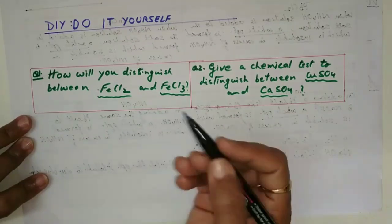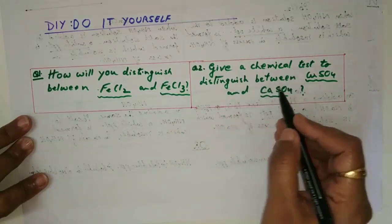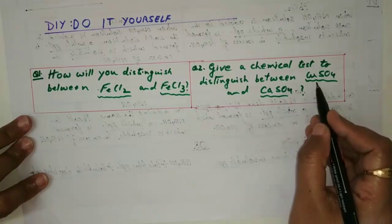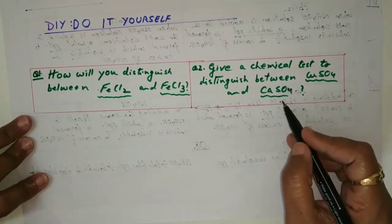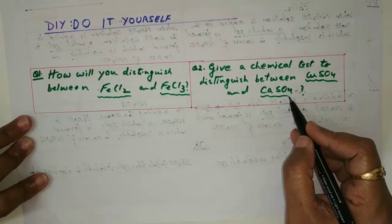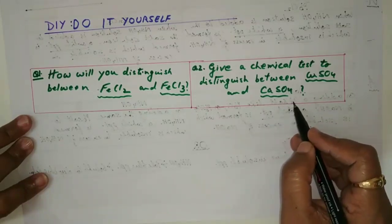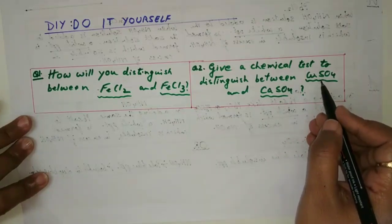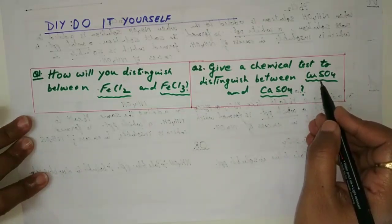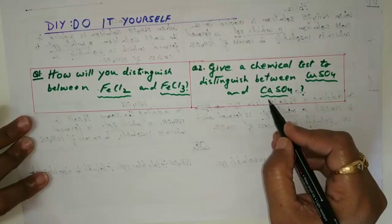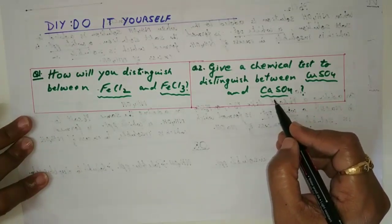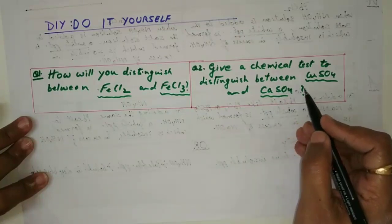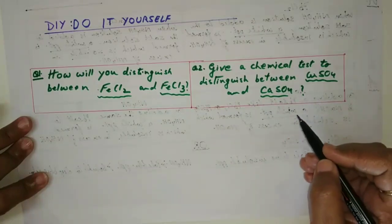Here is another similar question: give a chemical test to distinguish between copper sulfate and calcium sulfate. You can take sodium hydroxide or ammonium hydroxide. Copper salt gives a pale blue insoluble precipitate, while calcium salt gives a white insoluble precipitate.